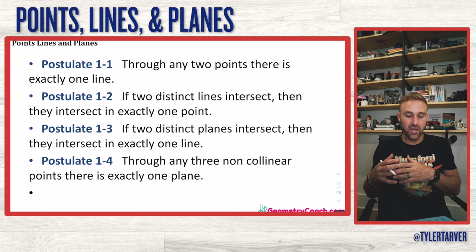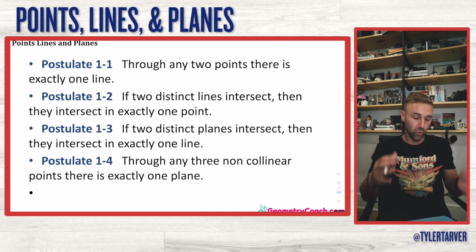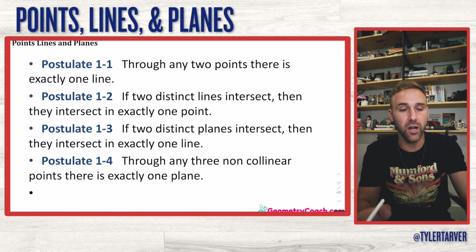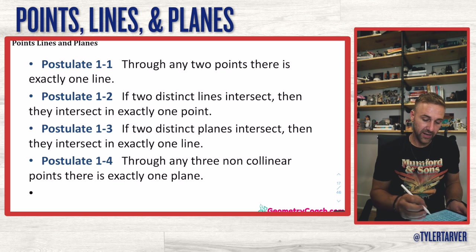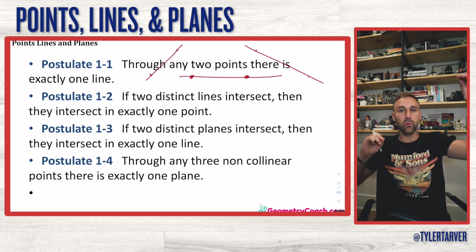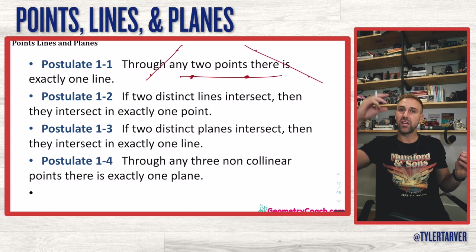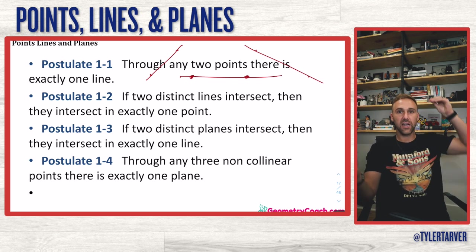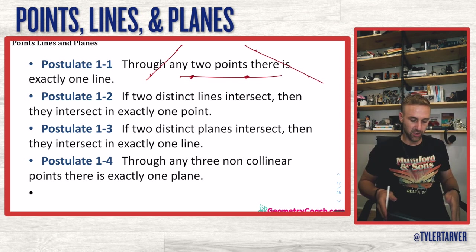A postulate is a rule in math. Postulate 1-1: through any two points, there is exactly one line. Anytime you have two points, no matter where they are, you can draw a line through them. A good way to visualize this is to grab some yarn and hold each end — anywhere you move, that is still a line as long as you keep it tight.